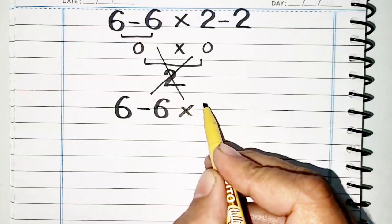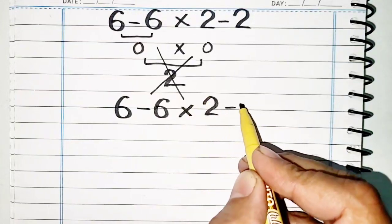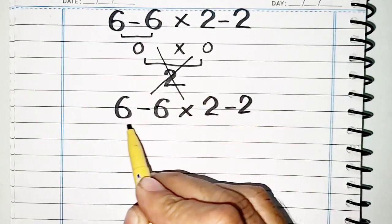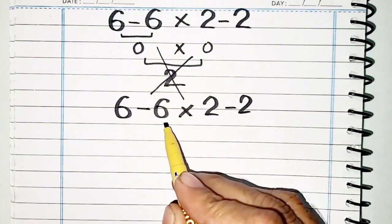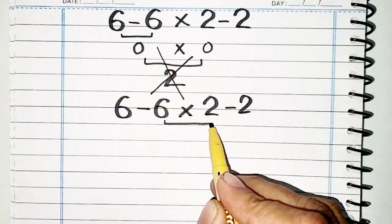6 minus 6 times 2 minus 2. 6 minus 6 has no priority, and 2 minus 2 has no priority because here is multiplication.